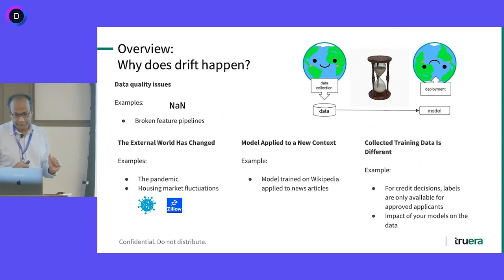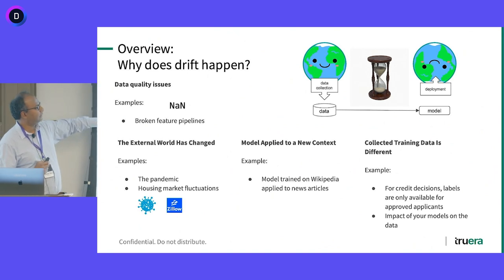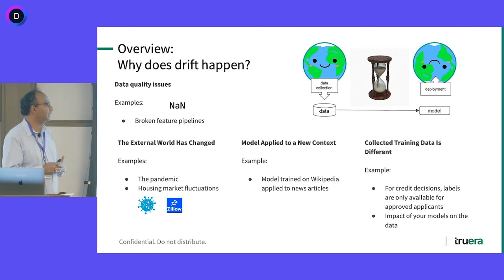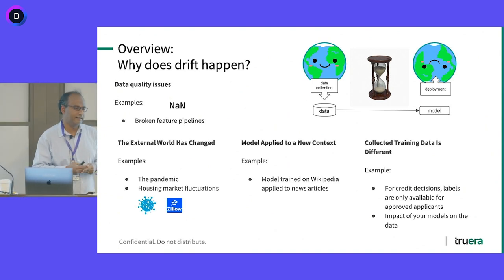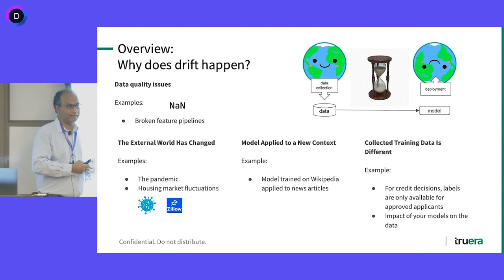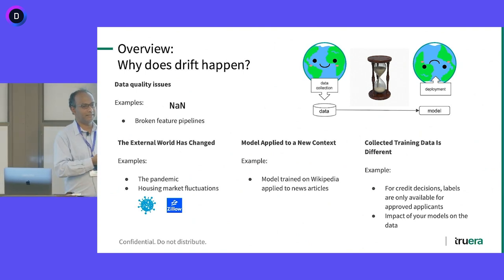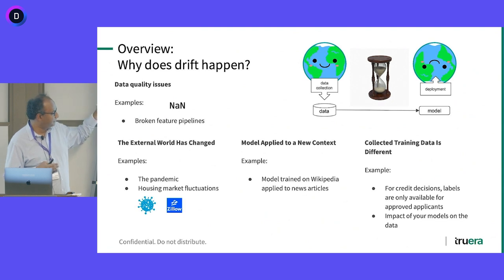You could also have data quality issues — for example, broken feature pipelines. We have seen this in the wild a lot. Retailers, for instance, sometimes their pricing models go out of whack because they're selling on Amazon, and Amazon has changed how it encodes certain products, while the retailer's data pipeline has not been readjusted. You can also have the external world changing — the pandemic and credit risk example is one instance of that.